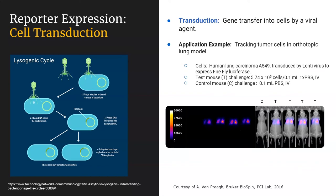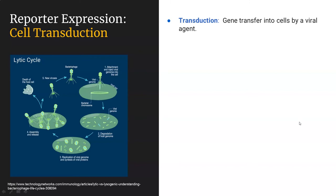Viral lysogenic modification — the controlled addition of viral genome to the target cell genome — can be a very nice way to add an optical reporter gene to the target cell genome. This is done for many different cell lines. In this particular example, we're looking at human lung carcinoma A549 cells that have been transduced by lentivirus to express firefly luciferase. These cells have been injected via tail vein, and the first capillary bed they encounter is the lung. The A549 cells become enmeshed in the pulmonary capillary bed, and upon injection of the luciferase substrate, you get light produced — detected here and superimposed onto X-ray.